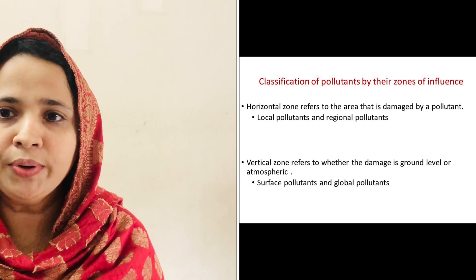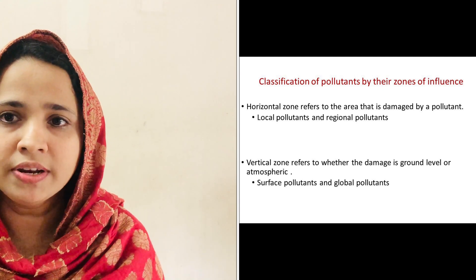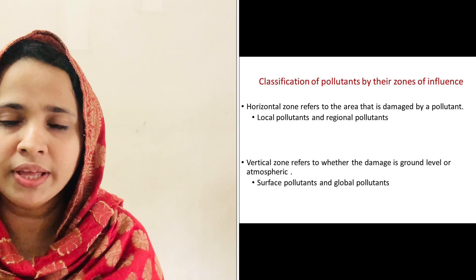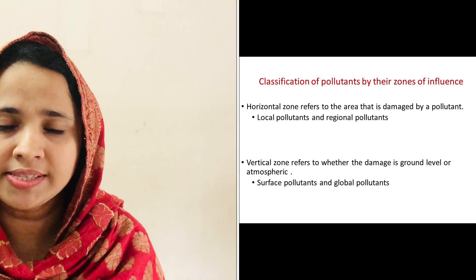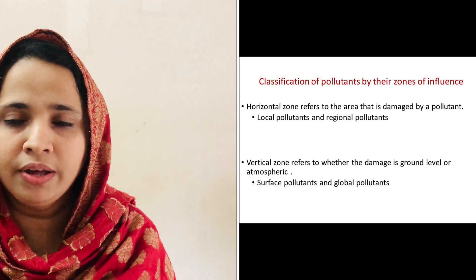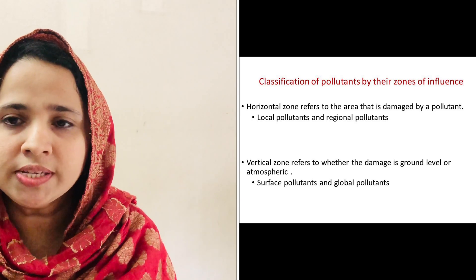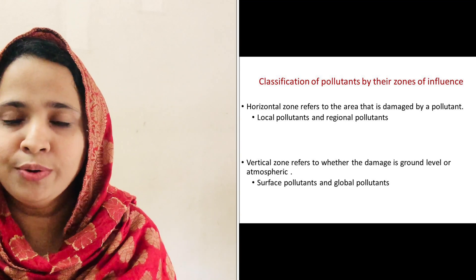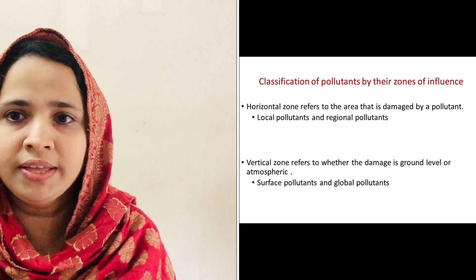An example for local pollutants is sulfur dioxide — they cause damage near the emission source. Regional pollutants cause damage further from the emission source. For example, acid rain. Vertical zone refers to whether the damage is at ground level or atmospheric level. For example, surface pollutants and global pollutants. Global pollutants cause damage by concentrating in the atmosphere. For example, carbon dioxide pollution. Global warming is resulting from the increasing concentration of carbon dioxide in the atmosphere.